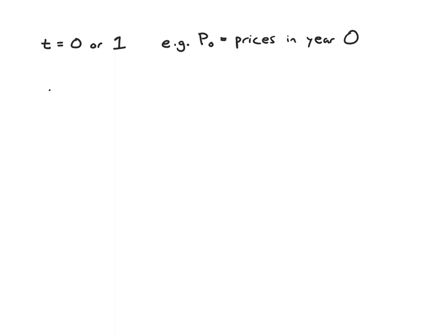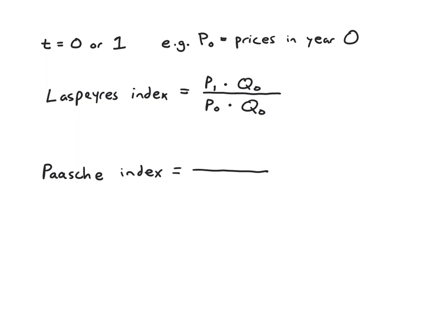So our Laspeyres index is P1·Q0 over P0·Q0. So like on the previous slide, it's a weighted ratio of prices this year versus prices in the previous year. And what you'll notice is when we put the formula for a Paasche index up, the formula is very, very similar except for a subtle difference. So a Paasche index will be P1·Q1 over P0·Q1. So the only difference is which quantities do you use? In a Laspeyres index, you use the old quantities, the quantities in year zero. With a Paasche index, you use the quantities in year one.